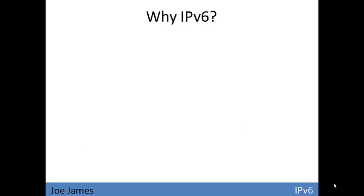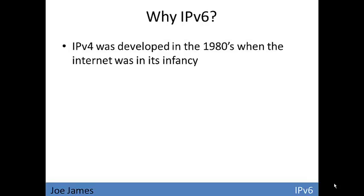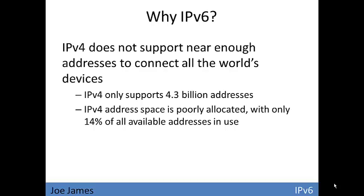Now why switch to IP version 6? IP version 4 was developed in the 1980s when the Internet was still very young. There was just no way to foresee the number of addresses that would be needed. They didn't predict that so many different devices would be connected to the Internet, that so many people would be using it, and that it would grow into something as big as it is.